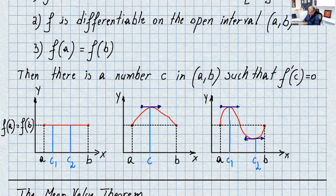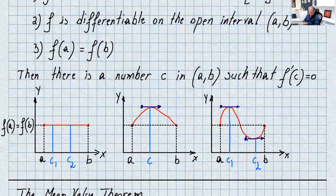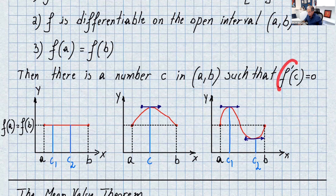Let's understand this by checking some graphs. In the first case we can have a constant function — just a line going from a to b. Don't forget f(a) always equals f(b) in all three cases. If it's a constant function, the derivative is zero everywhere, so we can have an unlimited number of c's — the derivative is zero everywhere between a and b.